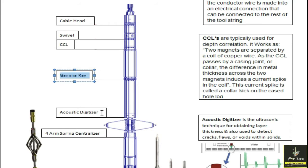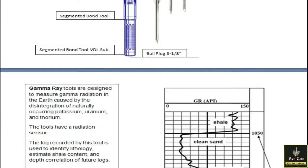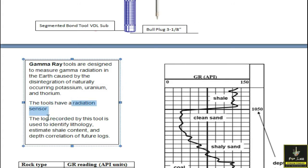The gamma ray is a tool designed to measure gamma radiation in the earth from disintegration of naturally occurring potassium, uranium, and thorium. The tool has a radiation sensor, and the data recorded by this tool is used to identify lithology, estimate shale content, and perform depth correlation.